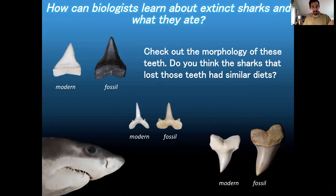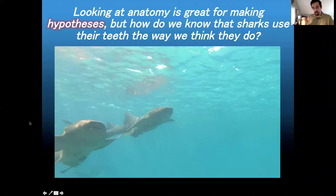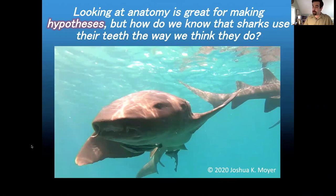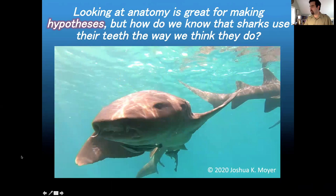That falls under the umbrella of functional morphology. Morphology is looking at the form of an animal or part of the animal; functional morphology looks at how that form relates to how it's used. Let me show you a video of a nurse shark — pay particular attention to the shape of its mouth and how it eats. I took a little piece of fish, and the nurse shark just swims by, opens its mouth a little bit, and sucks the food right in. Not exactly like the great white in Jaws, is it?